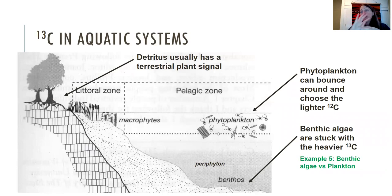Phytoplankton, because they can bounce around in the water column, they can avoid the heavy isotope, so they tend to have a really negative difference—so they don't have much of the heavy isotope—whereas benthic algae are stuck with the heavier C13. They're stuck to the surface, and so they just have to take whatever CO2 comes toward them. So I like to talk about beggars can't be choosers.